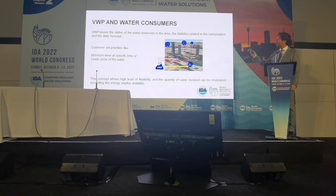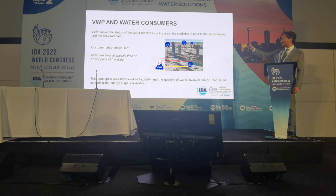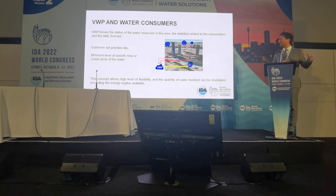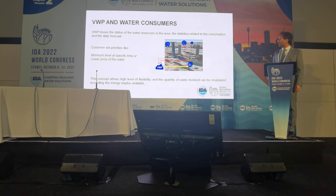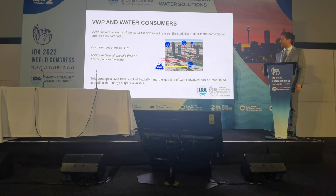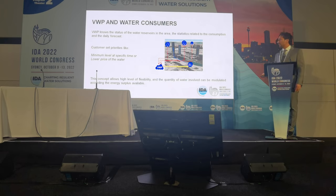The virtual water plant can allow the customer to set priorities — for example, minimum level at a specific time, or a lower price of water. Customer A can say: I know that at 6 pm all the people come back home, they will take a shower — we're speaking about a building of thousands of people — so I need the water at 6 pm. I will set the lower price of water, and the virtual water plant will dispatch the water at noon, when it is cheaper because energy is available and the cost of moving water is lower. This flexible concept is applicable using typical instruments like tank level sensors and pressure instruments, which are easily available.